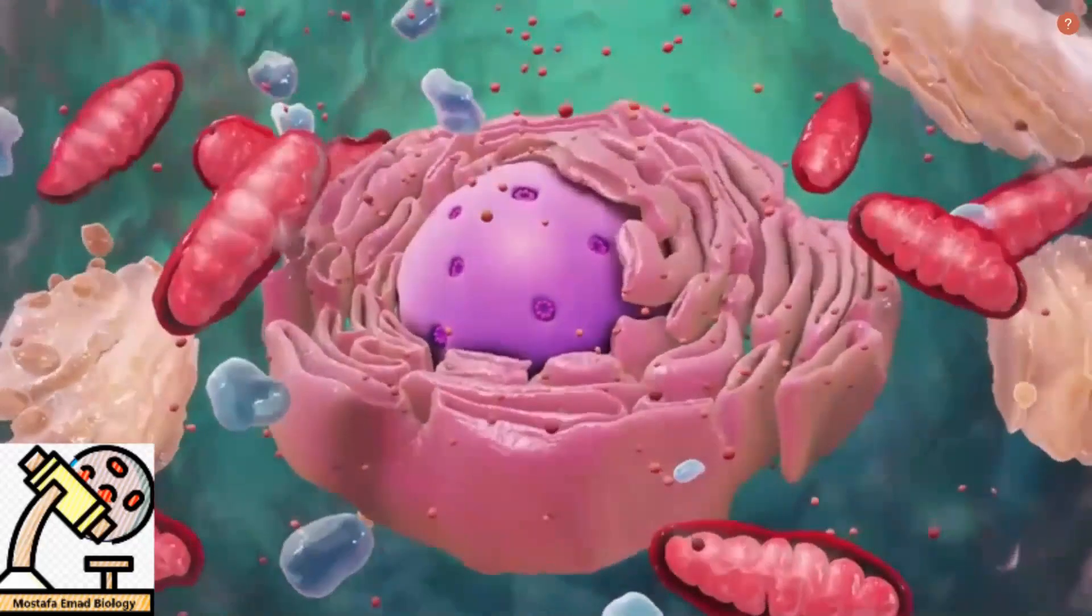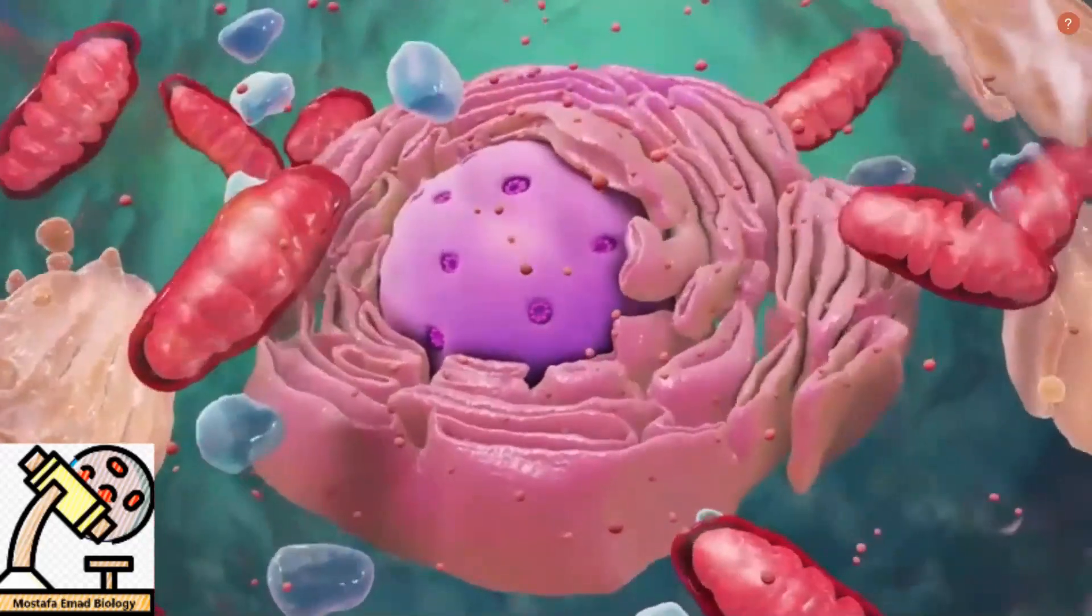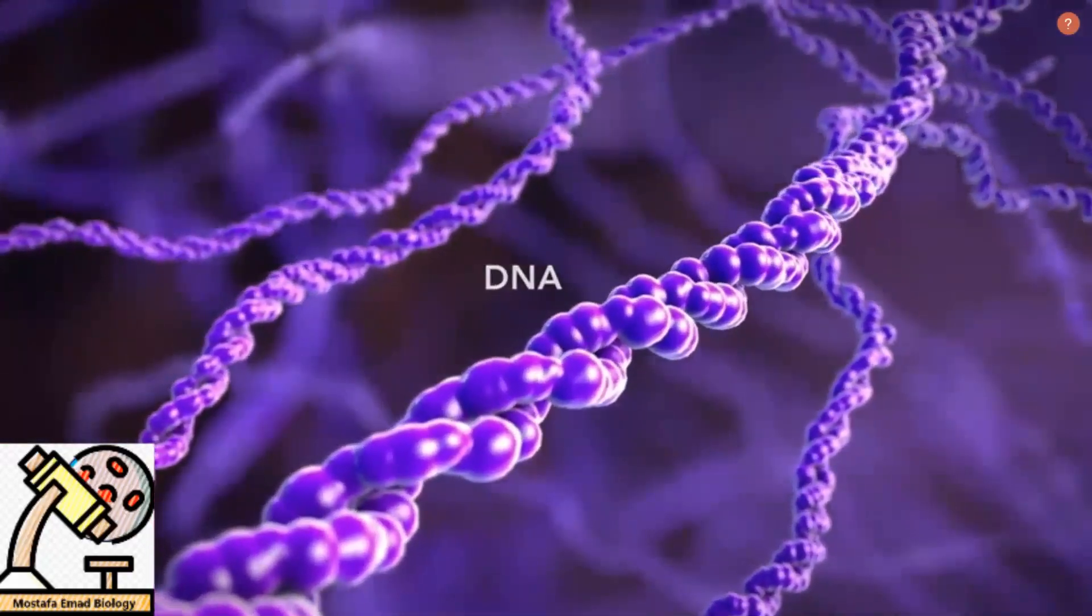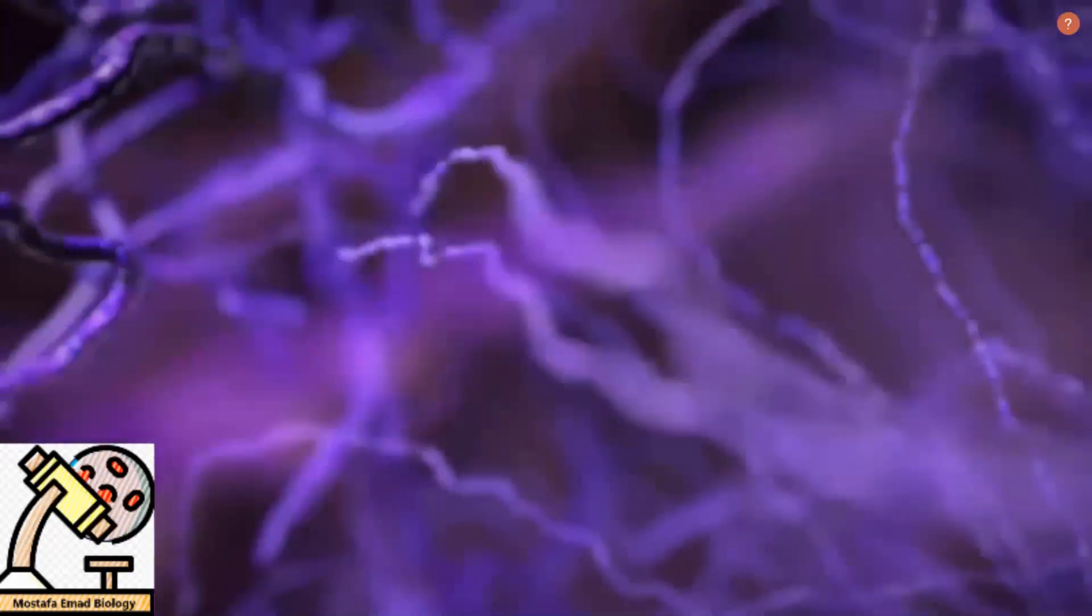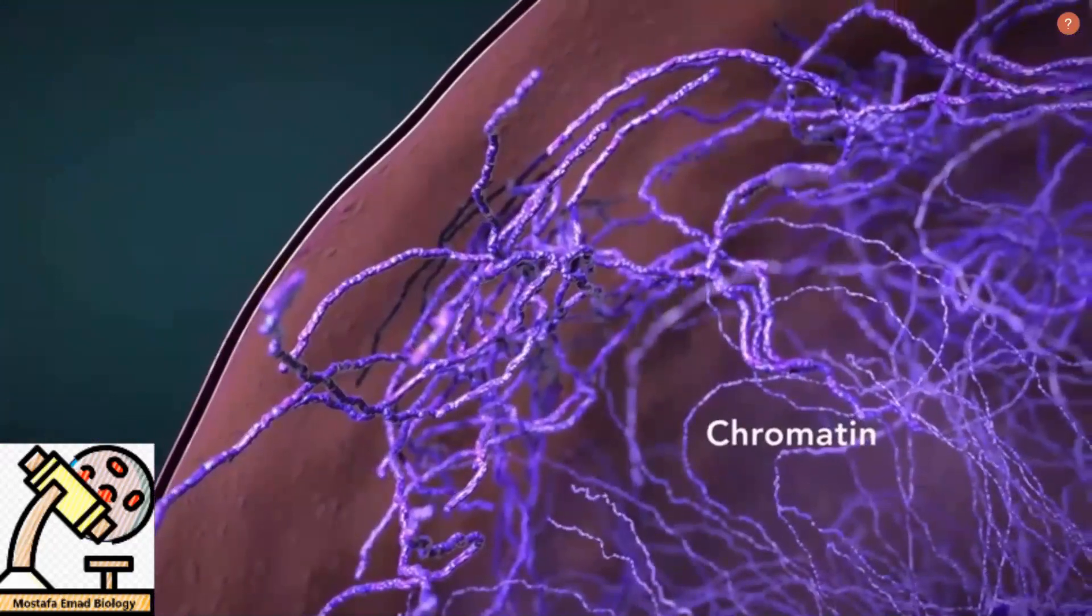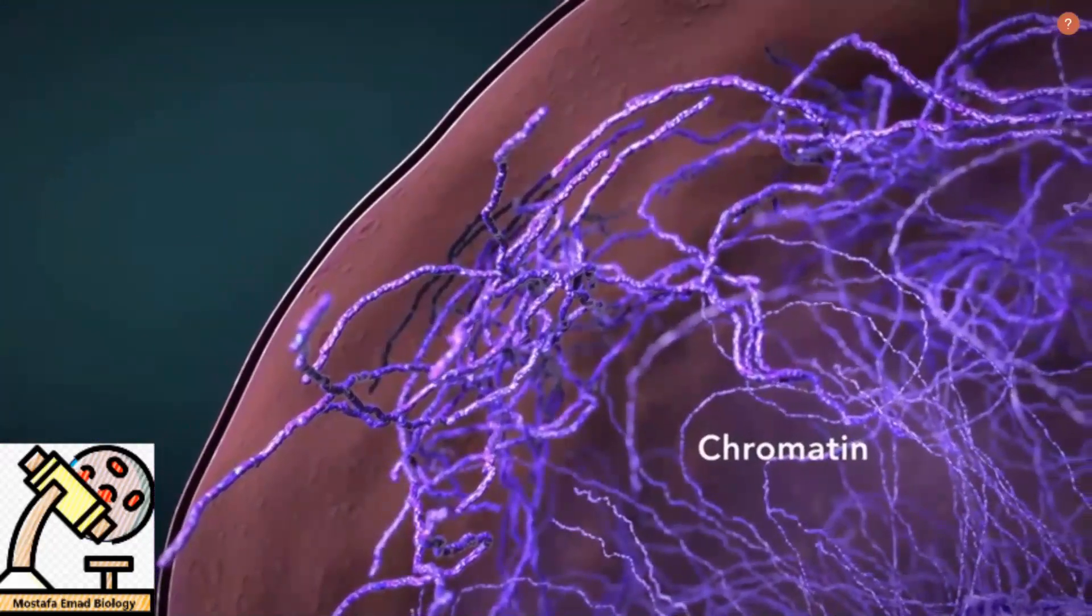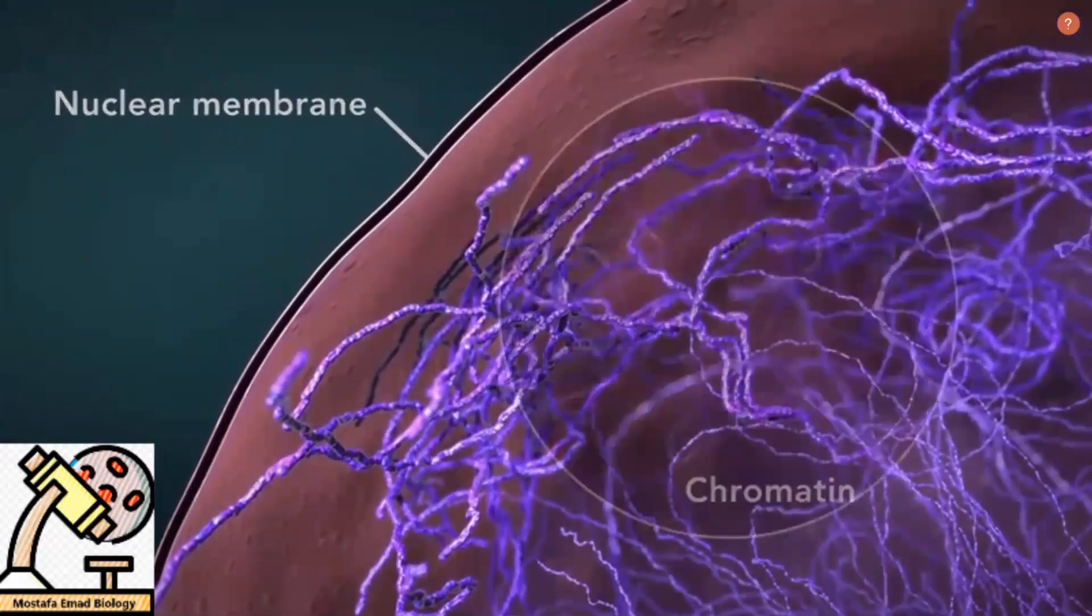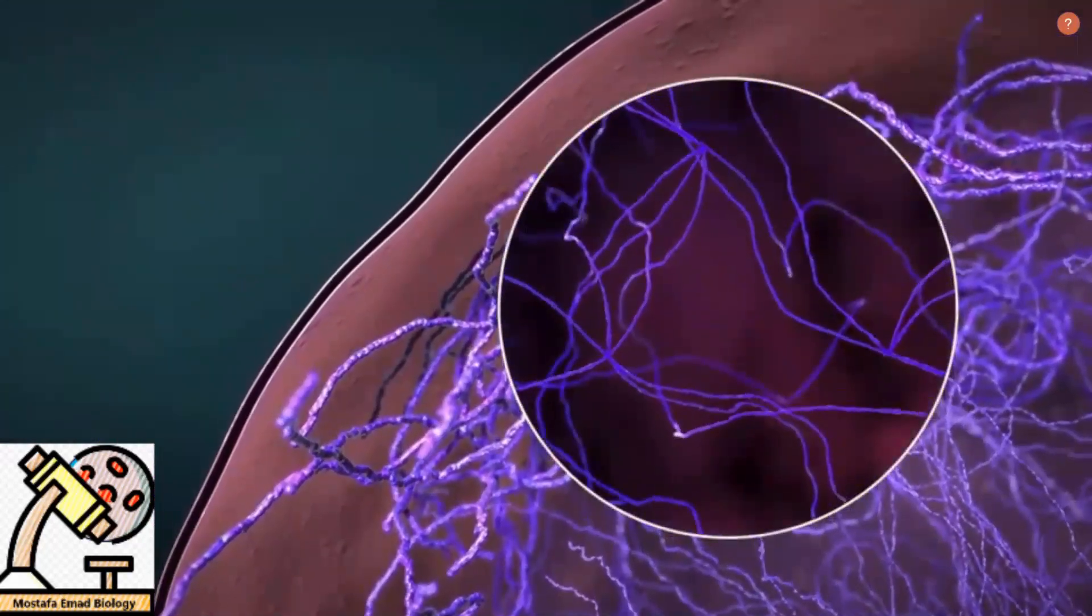Let's start with the nucleus or the control center of the cell. The nucleus contains DNA or genetic material. DNA dictates to the cell what it's going to do and how it's going to do it.